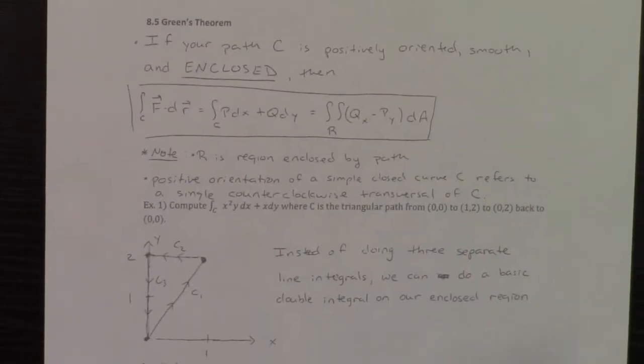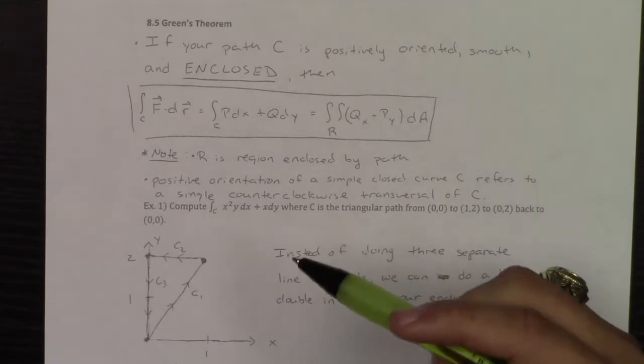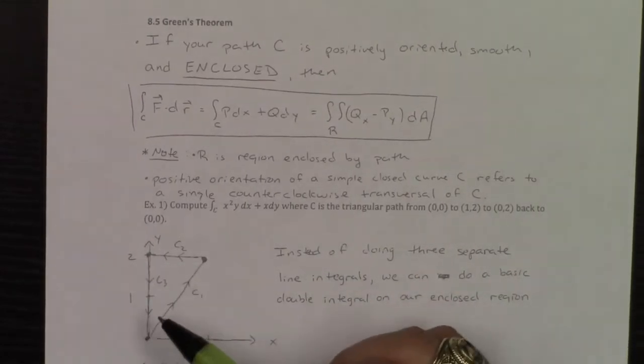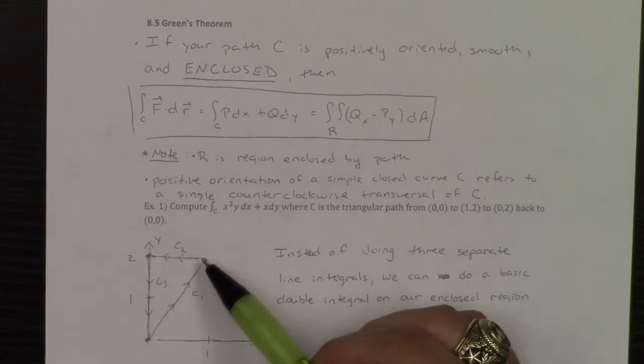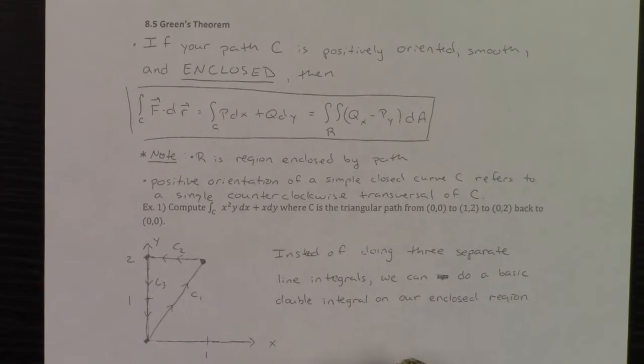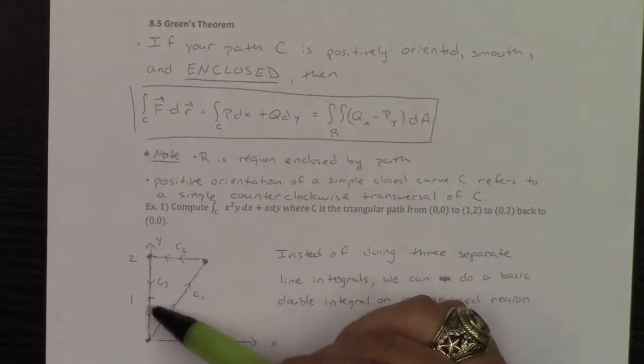Well what you would have to do, if you remember back to the line integral of part 1, we did a problem where we had multiple paths, so you'd have to do the line integral over path C1. Then you'd have to do it all over again, step 1,2,3 for path C2. Then all over again for a path C3.